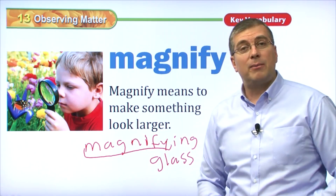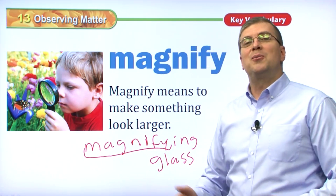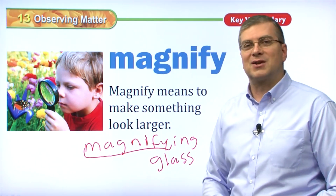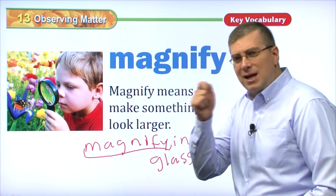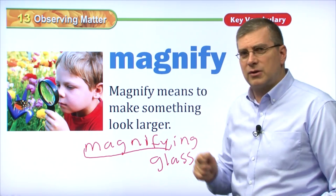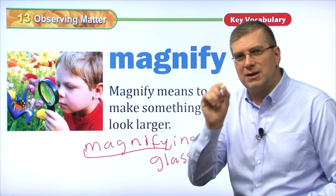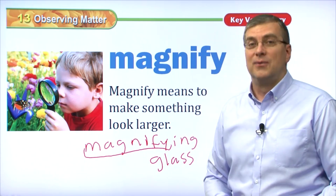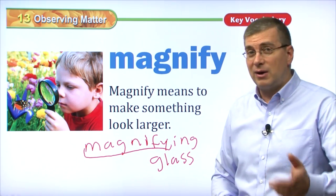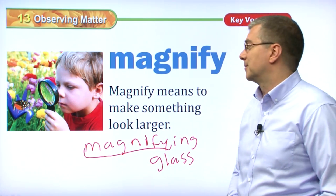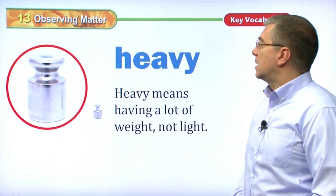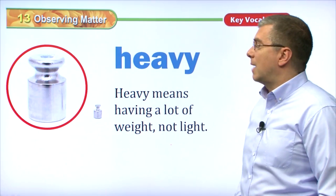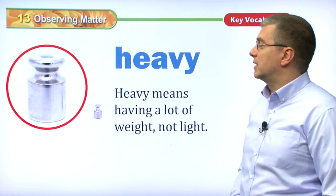Do you have a magnifying glass? If you don't, maybe you should go out and buy one — they're not expensive. Take a look at the things around you, make them larger. You can see the details of something very well. Very interesting! Okay, let's take another look at another vocabulary word for this lesson.